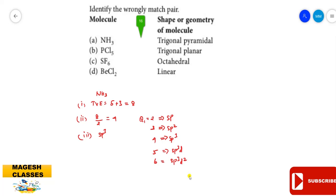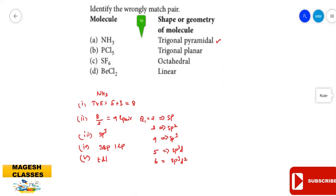For ammonia, which is sp³ hybridized, we identify the bond pairs and lone pairs. There are 3 hydrogen atoms giving 3 bond pairs and 1 lone pair — 4 pairs total. Because of this lone pair of electrons, the geometry is not a regular tetrahedron; it is trigonal pyramidal in shape. So ammonia is correctly matched.